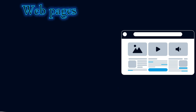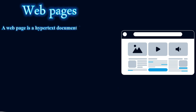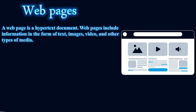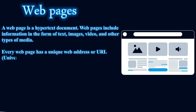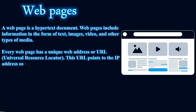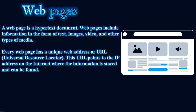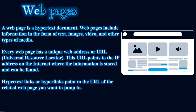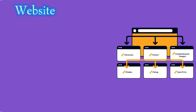A web page is a hypertext document that includes information in the form of text, images, videos, and other types of media. Every web page has a unique web address, or URL (Universal Resource Locator). This URL points to an IP address on the internet where the information is stored. Hyperlinks point to the URL of the related web page you want to jump to.